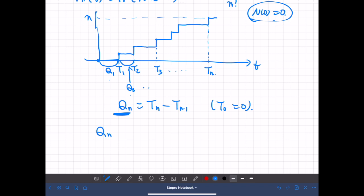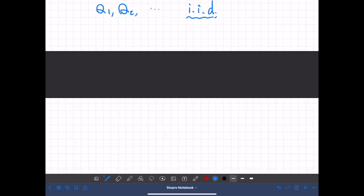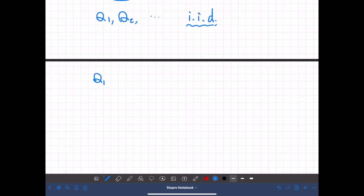So qn, q1, q2, and so on, they are independent, identically distributed. So it's iid. And also q1 is equal to t1 minus t0, but t0 is 0, so this is t1. So now consider the cumulative distribution function of t1.